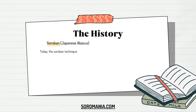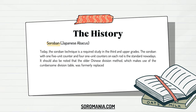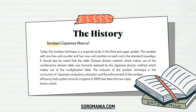Today, the Soroban technique is a required study in the third and upper grades. The Soroban with one five-unit counter and four one-unit counters on each rod is the standard nowadays. The older Chinese division method, which used the cumbersome division table, was formally replaced by the Japanese division method, which uses the multiplication table. The inclusion of Soroban in compulsory education and the enforcement of the Soroban efficiency test system since its inception in 1928 have been the two major factors leading to its present popularity in Japan.